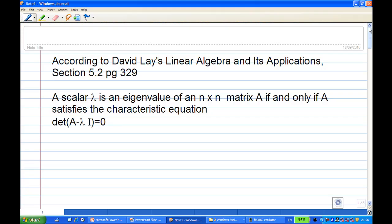According to David Lay's Linear Algebra and Its Applications, Section 5.2, page 329: A scalar λ is an eigenvalue of an n by n matrix A if and only if A satisfies the characteristic equation det(A - λI) = 0.